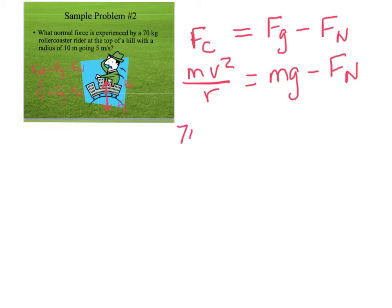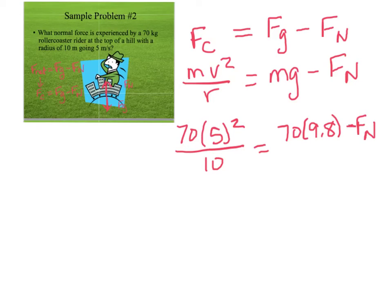So the mass of our rider, 70, times his velocity, he was going over the hill at 5 meters per second, we're going to square that, and it was a 10 meter hill. It's going to equal our mass, 70, times 9.8 g. Remember we're looking for our normal force, so we don't know that. So this side comes out to 175 equals 70 times 9.8, which is 686 minus our normal force.